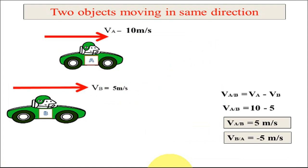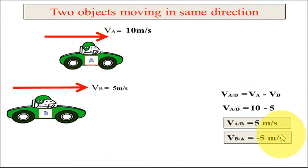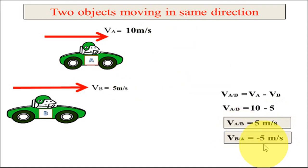We assume two vehicles moving in the same direction along the positive x-axis: velocity of A is 10 meters per second and velocity of B is 5 meters per second. The relative velocity of A with respect to B is va minus vb, giving 10 minus 5 equals 5 meters per second. The relative velocity of B with respect to A is vb minus va, which gives minus 5 meters per second.